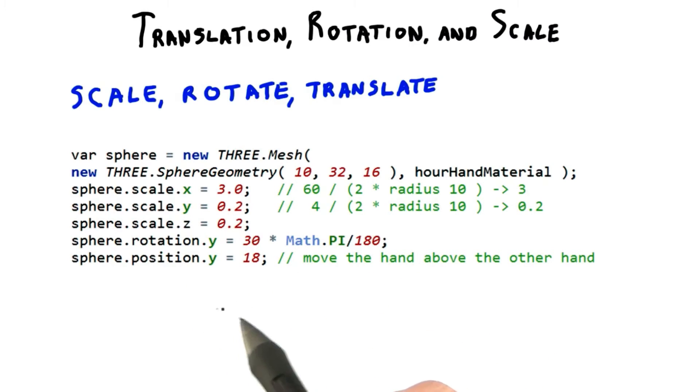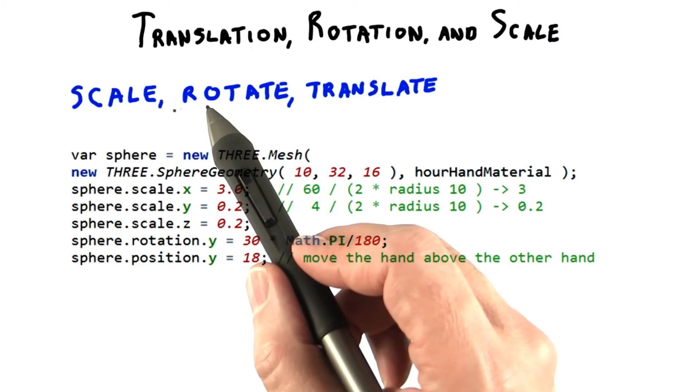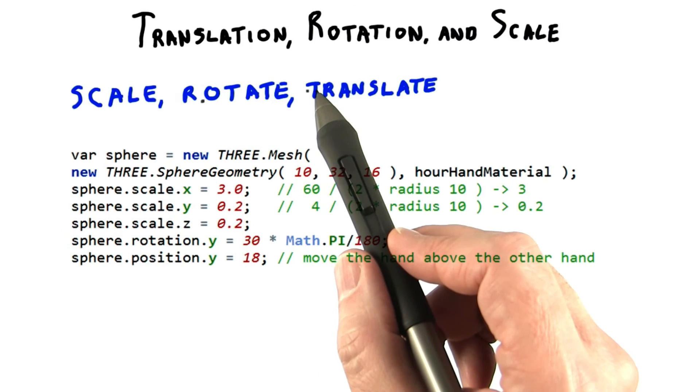That's possible, and in fact, we'll later see how we need to use a different order to make our clock example look really good. For now, though, we'll stick with scaling, then rotation, then translation, in that order.